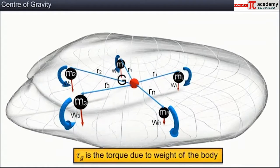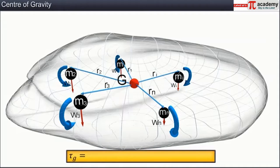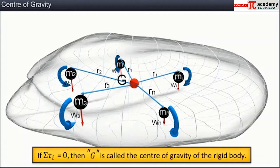If the torque due to the weight of the whole body about G is the total gravitational torque tau_G, then tau_G equals sigma tau_i, which also equals sigma ri cross wi. If the point G is such that sigma tau_i equals zero, then G is called the center of gravity of the rigid body.